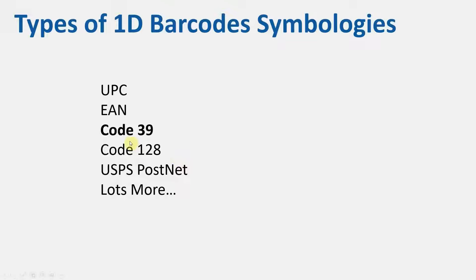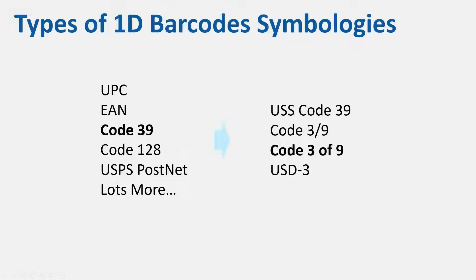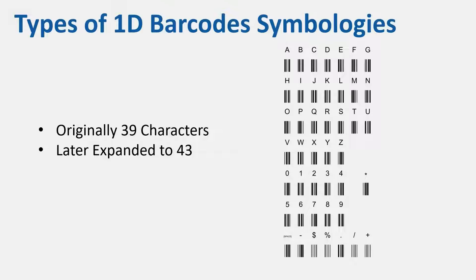We're going to focus on Code 39. Code 39 has different names: USS Code 39, Code 3/9, Code 3 of 9, USD-3, etc. — but they all refer to the same thing. It's called Code 39 because originally there were 39 characters, including letters A to Z, digits 0 to 9, and some symbols. Later those 39 characters were expanded to 43.